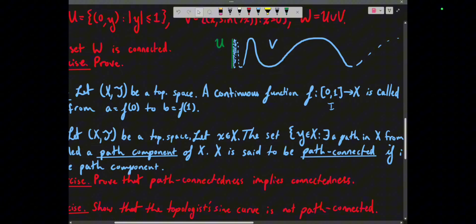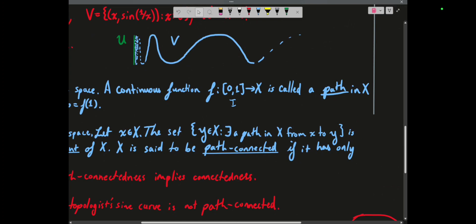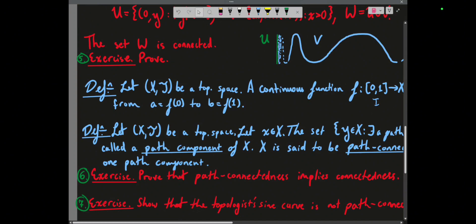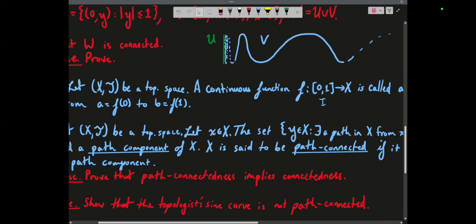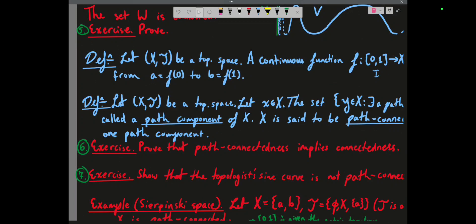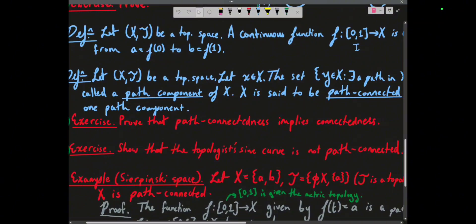Let X be a topological space, x a point in X. The set of all points y in X such that there exists a path in X from x to y is called the path component of X containing x. The topological space X is path-connected if it has only one path component. A space has at least as many path components as connected components — points in different connected components are certainly in different path components.